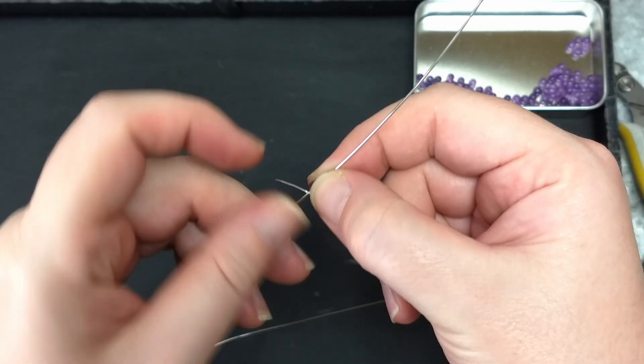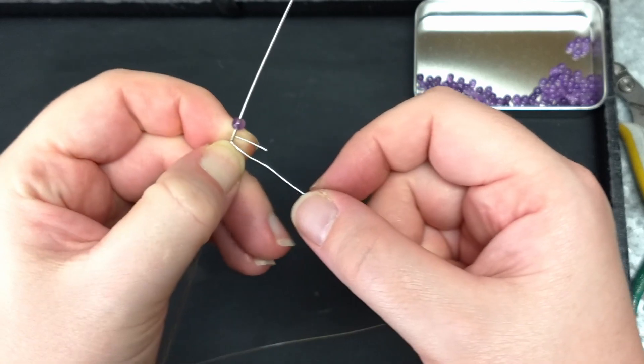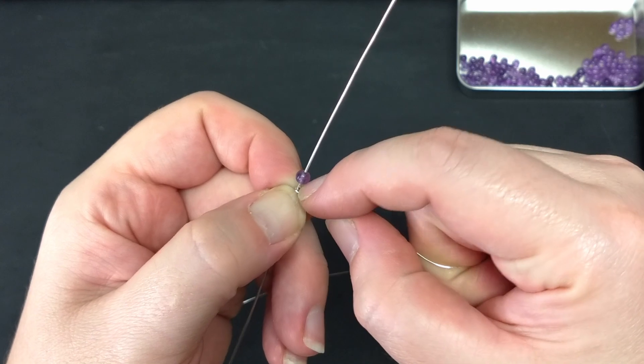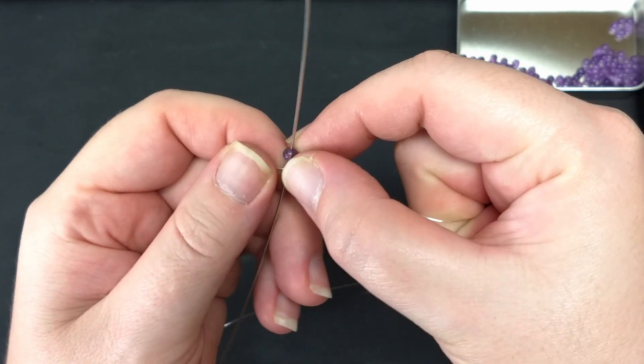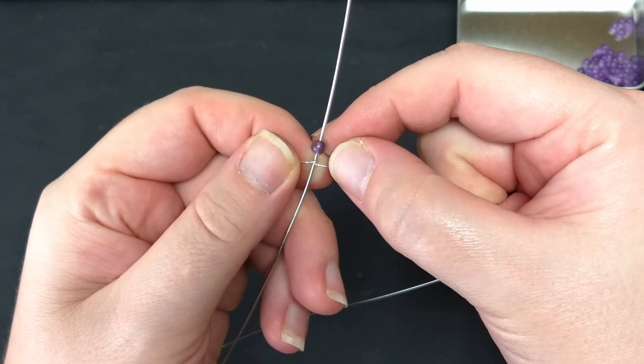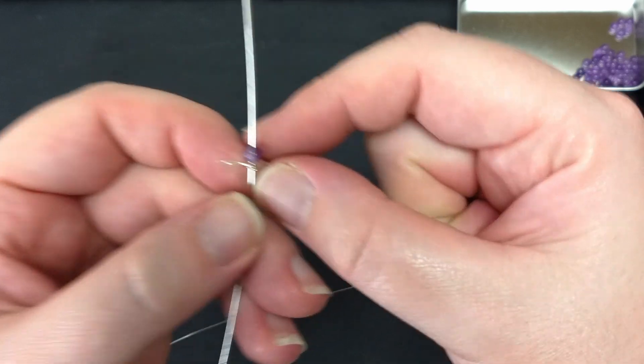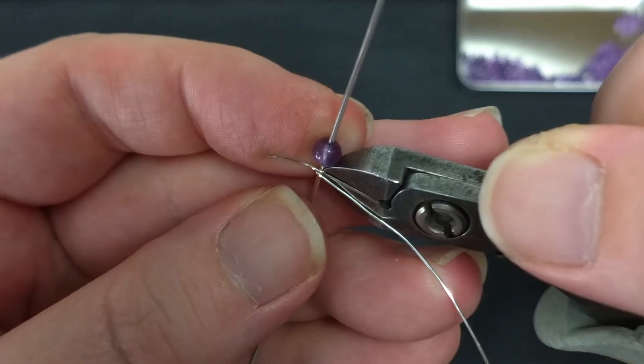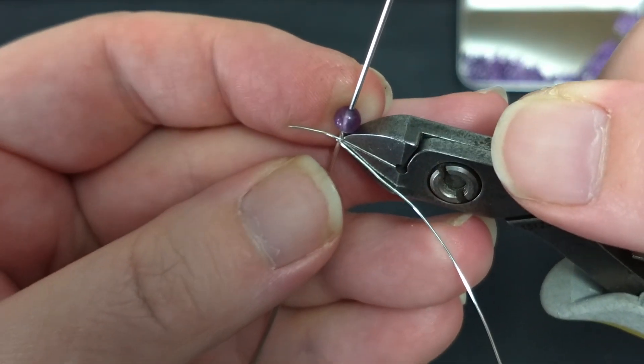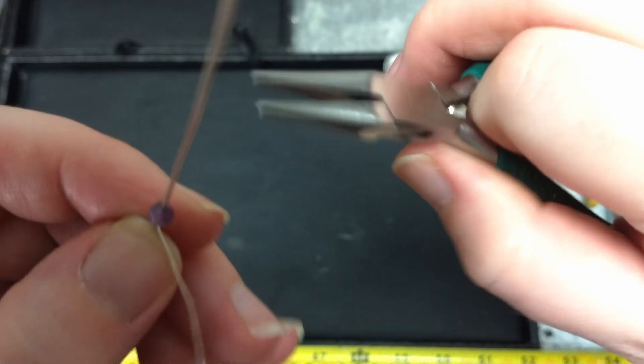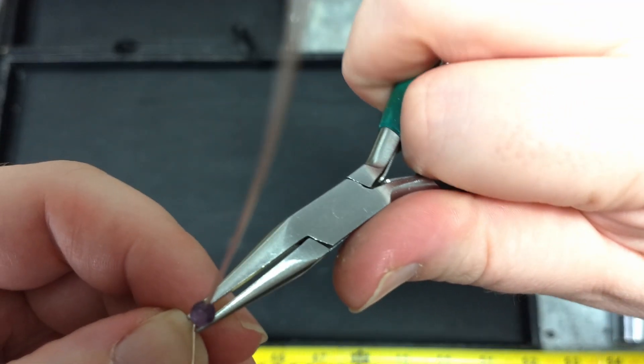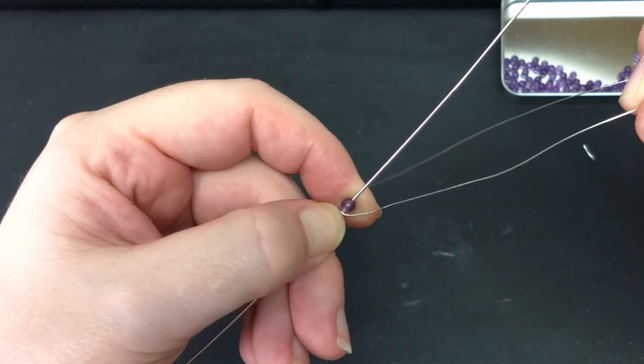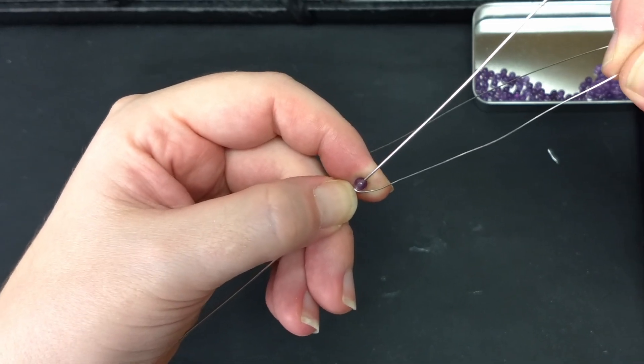Start wrapping the 26 gauge wire onto the 20 gauge wire. Make sure that when you trim the wire tail that the end is tucked between the wrap and the bead. Hold the wire in place with your thumb and secure it on the other side of the bead by wrapping the wire over the top.